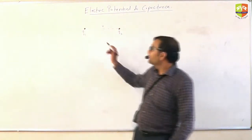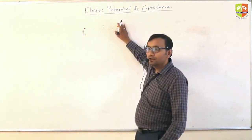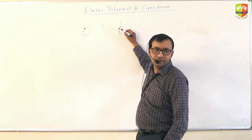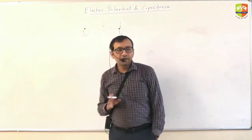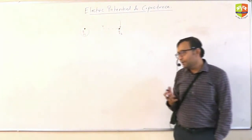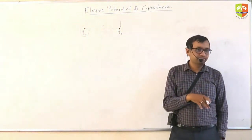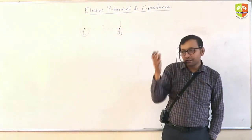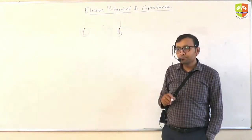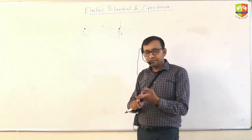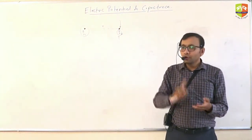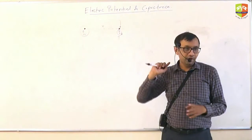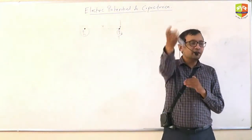If Q1 were not there, potential energy would be zero. Something is happening because of Q1, that is why there is potential energy when you place Q2 here. It makes sense to define a physical variable which is potential energy per unit charge. More is the value of Q2, more is the potential energy — it is directly proportional to Q2. So if I take 1 coulomb of charge and potential energy is X, if I take 2 coulombs the potential energy will be 2X.